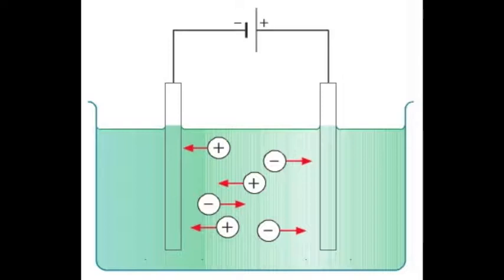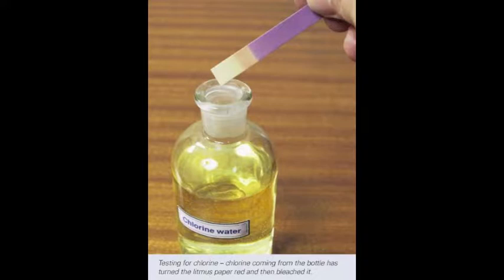Seawater contains many dissolved substances. The most common of these is sodium chloride or common table salt. If a direct current is passed through seawater, chlorine gas is produced at one of the electrodes.